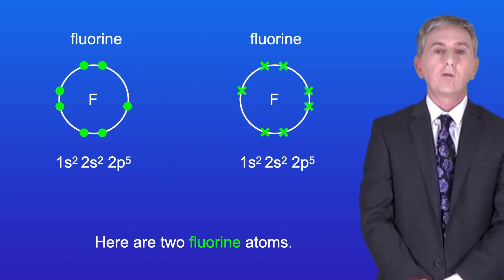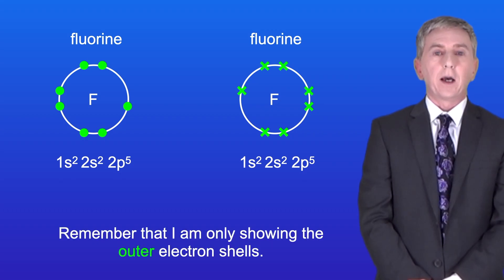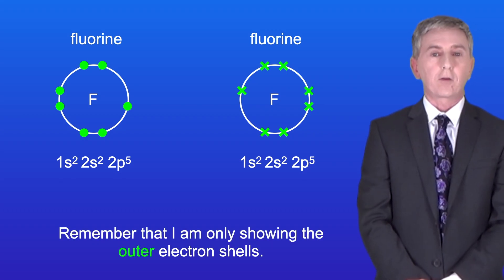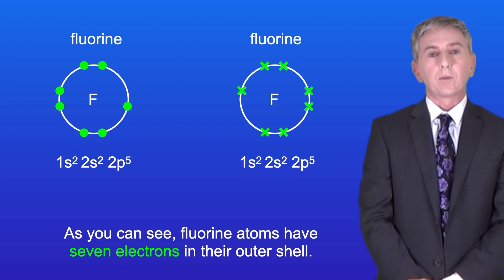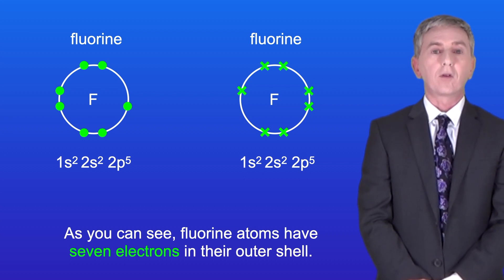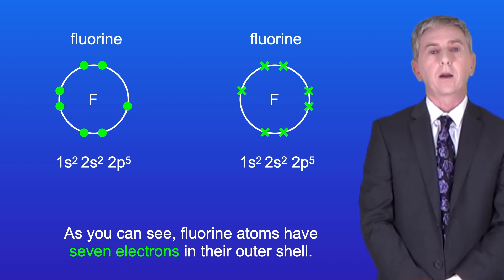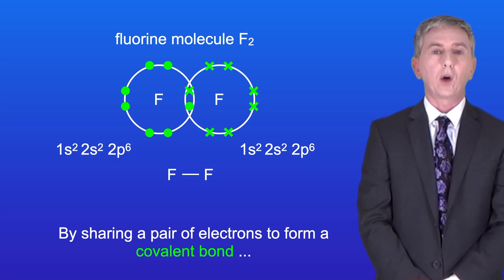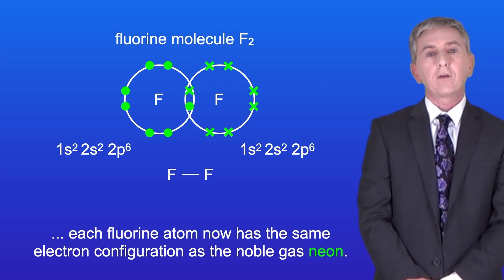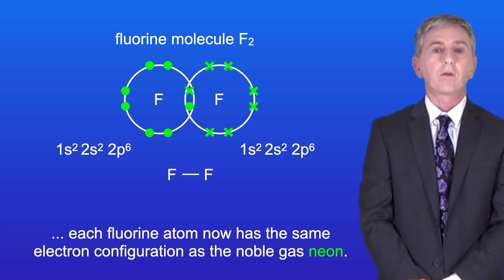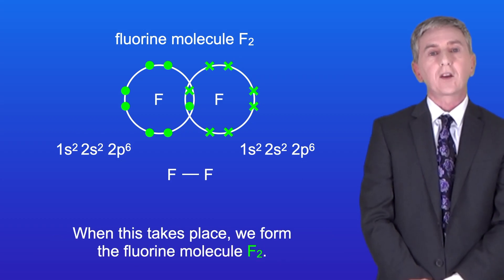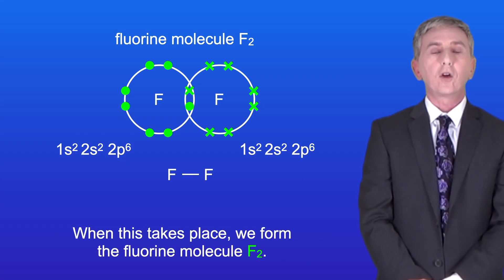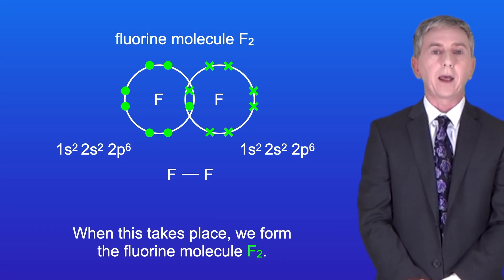Here are two fluorine atoms — I'm only showing the outer electron shells. Fluorine atoms have seven electrons in their outer shell, and by sharing a pair of electrons to form a covalent bond, each fluorine atom now has the same electron configuration as the noble gas neon. When this takes place we form the fluorine molecule F₂.